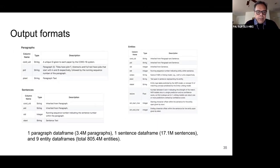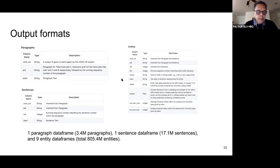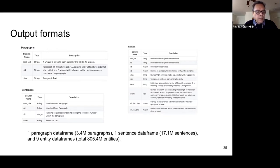From either pipeline, the outputs are the same: a paragraph dataset, a sentence dataset, and the various entity datasets from each of the NER and NERL models. The output formats reflect the hierarchical nature of the data — a paragraph contains multiple sentences, each of which contains multiple entities. The foreign keys cord_UID, PID, and SID are repeated and point back from child to parent, making it easy to run analysis at a sentence, paragraph, or document level. To give you an idea of volume: the output from the September 28, 2020 version of CORD-19 has 3.4 million paragraphs, 17.1 million sentences, and 805.4 million entities from the nine different NER and NERL models.